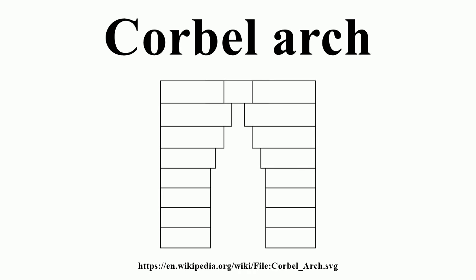Ireland: The Newgrange passage tomb has an intact corbel arch supporting the roof of the main chamber, dating from about 3000 BC.